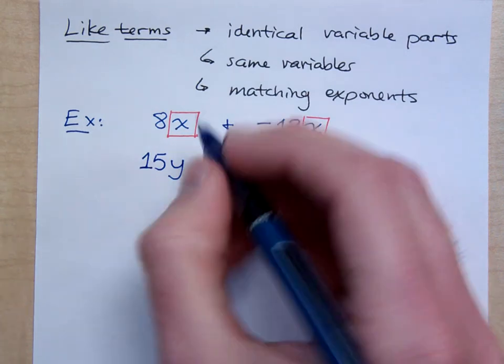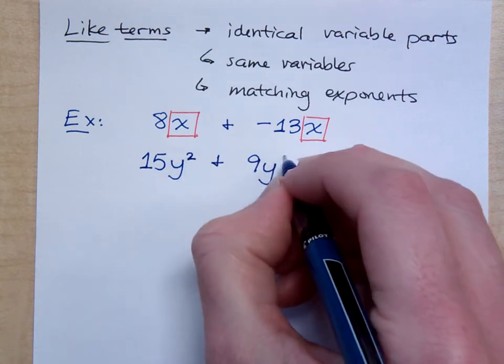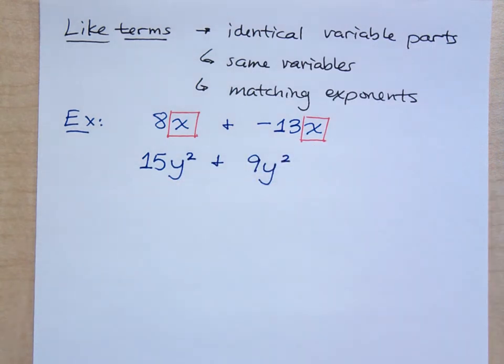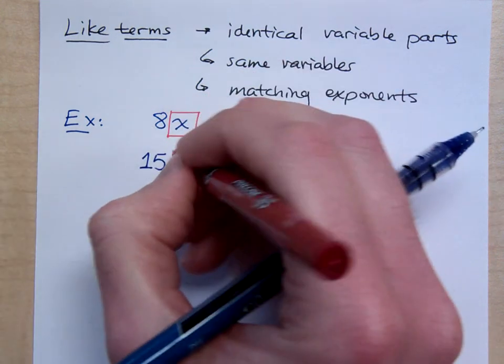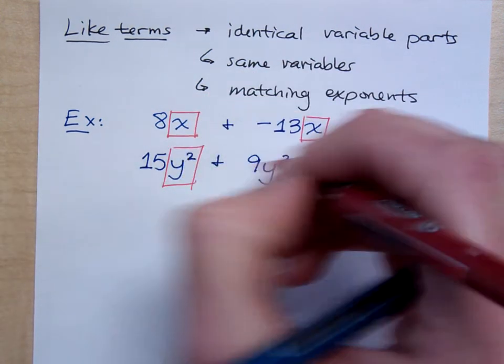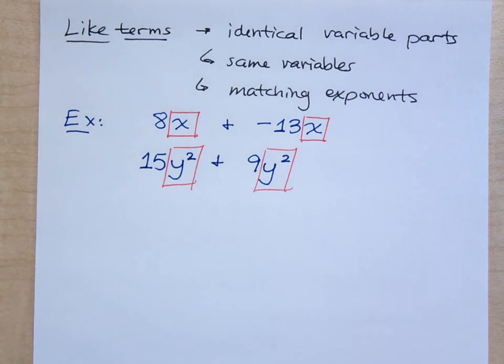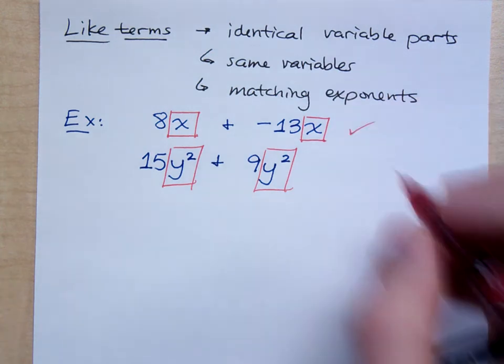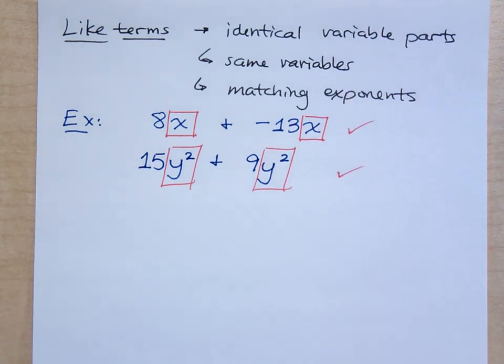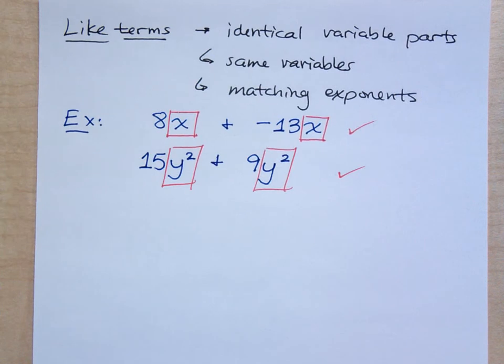Look at these two guys. I'm going to make these even crazier. I'm going to do 15y² and 9y². Are these guys like terms? Yes. Look at the variable pieces here. Not only are they both y but they have exponents that match up. I could add or subtract. It depends on what it's asking me to do. Those are like terms.